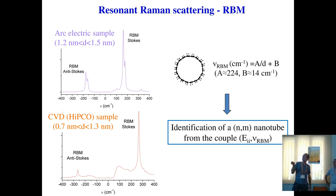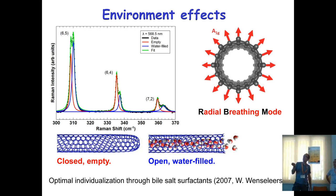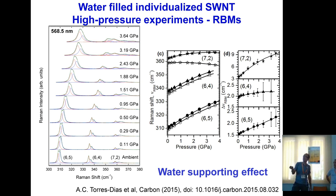In the radial breathing mode spectra, Stokes and anti-Stokes peaks are visible at different frequencies corresponding to different tube diameters. The RBM frequency is inversely proportional to diameter, so you can identify tube chiralities. For a specific chirality (e.g., 6-4 or 7-2 tubes), the RBM shows two components — empty tube vs. tube filled with water. These two components can be tracked with pressure, showing that the frequency difference between empty and filled increases with pressure, indicating a water-supporting effect inside the tube.